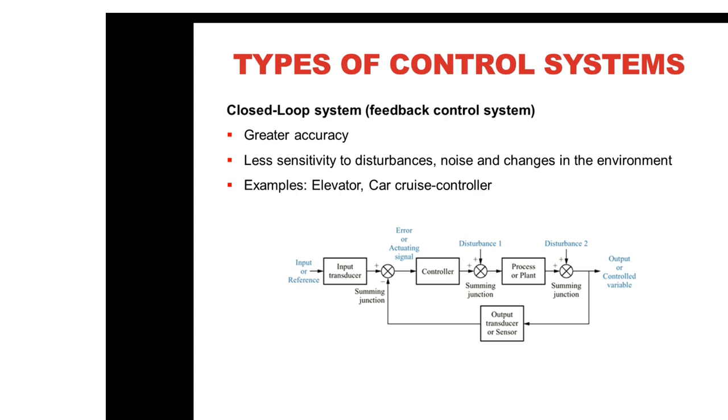In a typical closed-loop system, the input command or reference is sent through a transducer, which is sent to the controller. The controller drives the process or plant to generate an output or control variable. The output signal is measured via a sensor or output transducer through a feedback path and subtracted from the input via a summing junction.